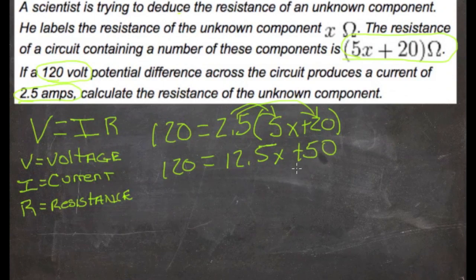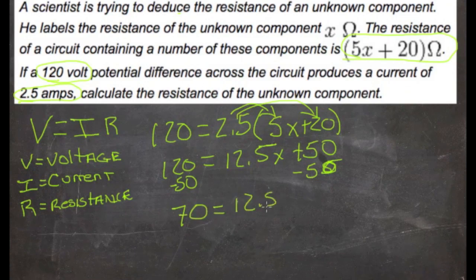We need to get rid of that 50, so we'll subtract it from both sides. Minus 50 over here. So we'll have 70 on the left-hand side equals 12.5x.